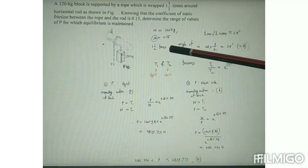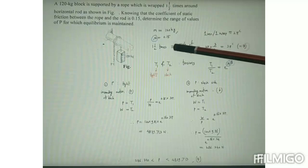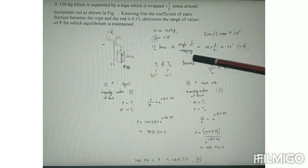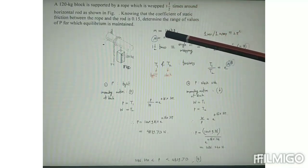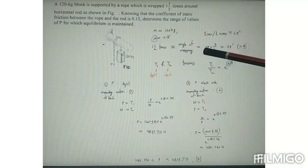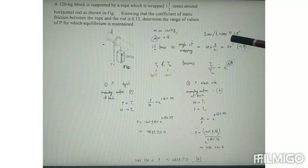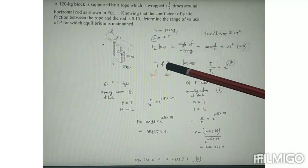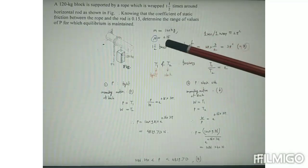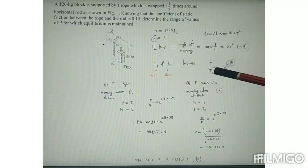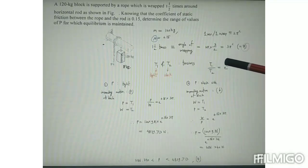One and a half times wrapping means n = 3/2. Using the formula β = 2πn, we get β = 2π × (3/2) = 3π radians. T1 and T2 are the tensions acting on the rope, with T1 as the tension on the tight side. The relationship is T1/T2 = e^(μθ), where T1 is the tight side tension, T2 is the slack side tension, μ is the coefficient of friction, and θ is the angle of wrapping.